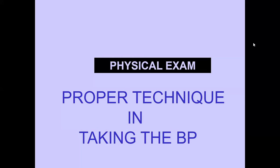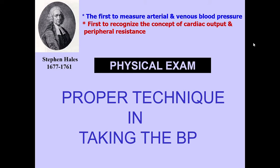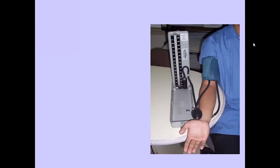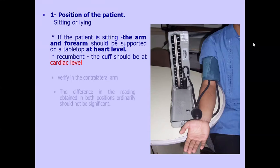Phase four is more of a murmur rather than a clear sound. Phase five is the silent phase — no more Korotkoff sounds are heard. These phases correspond to the proper technique in taking your blood pressure. The first person to measure arterial and venous blood pressure was Stephan Hales, who first recognized the concept of cardiac output and peripheral resistance.